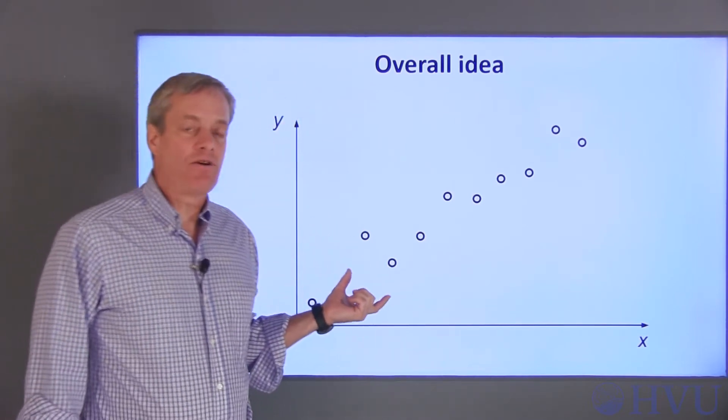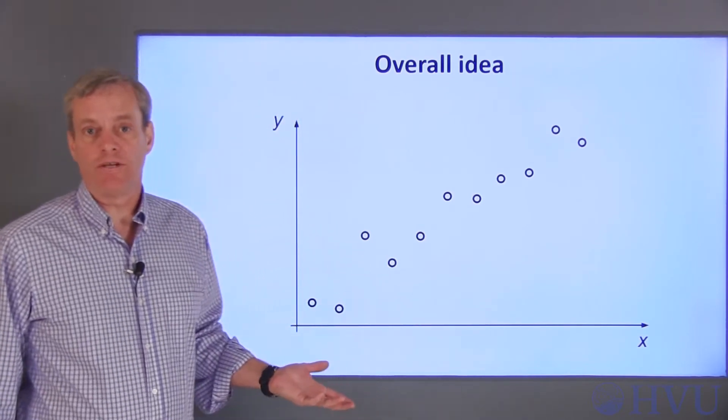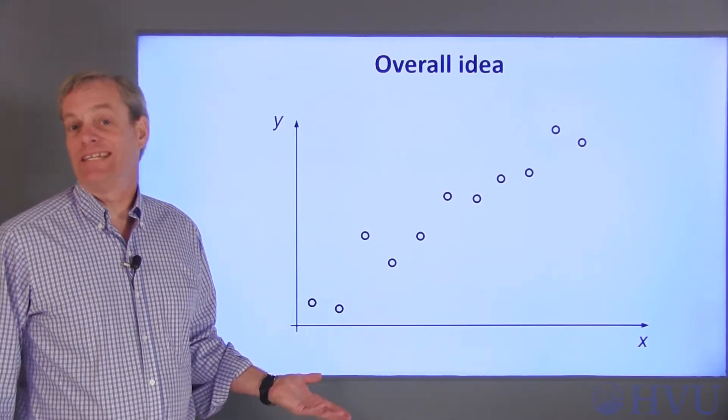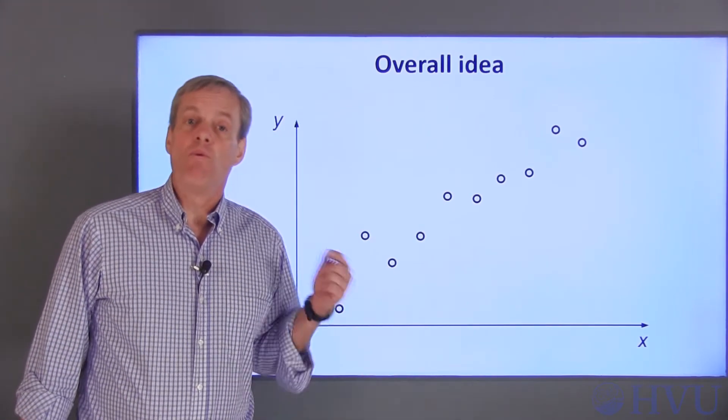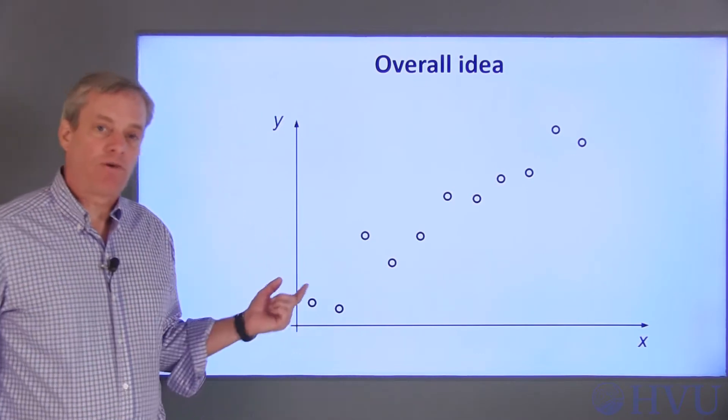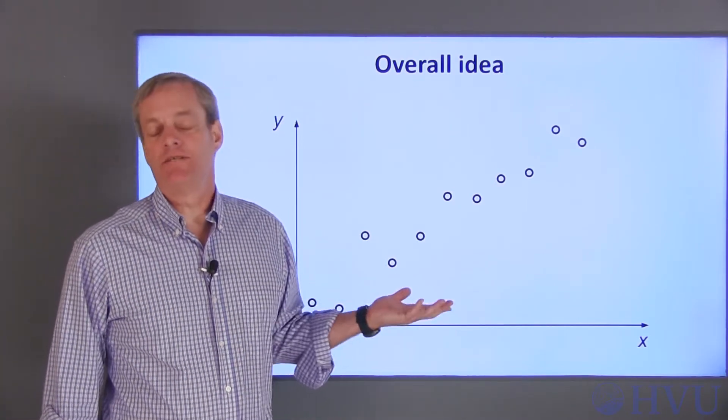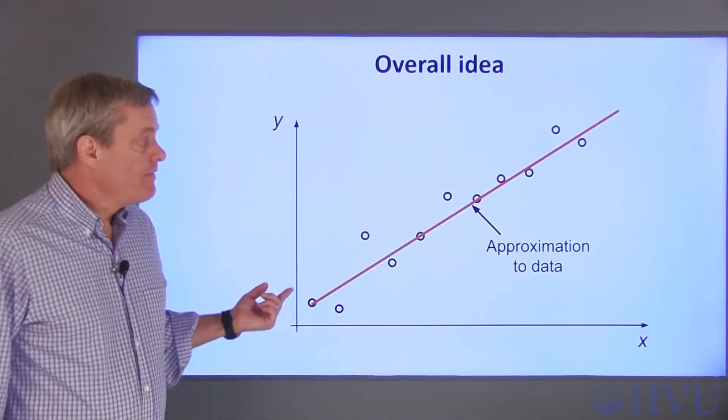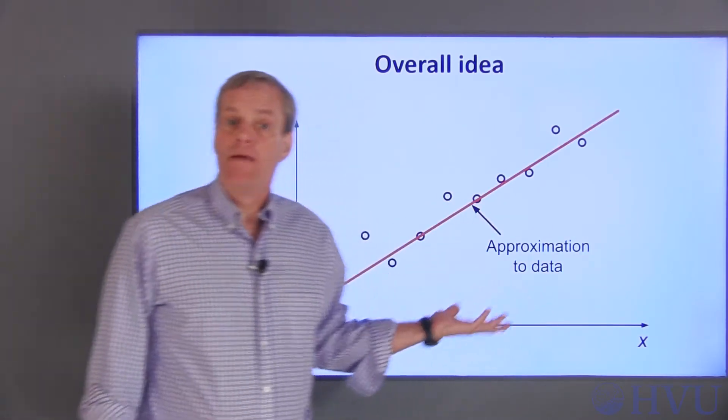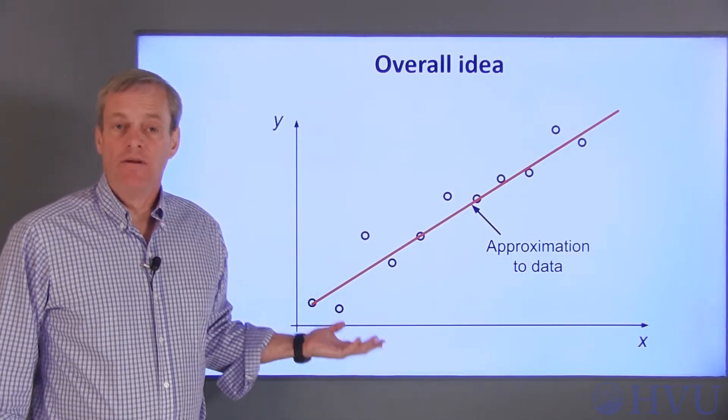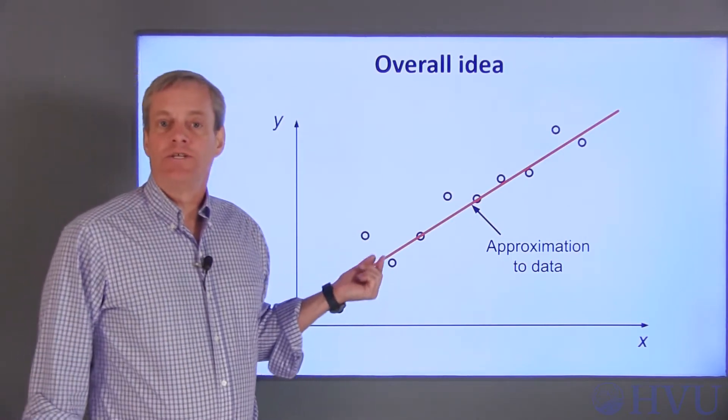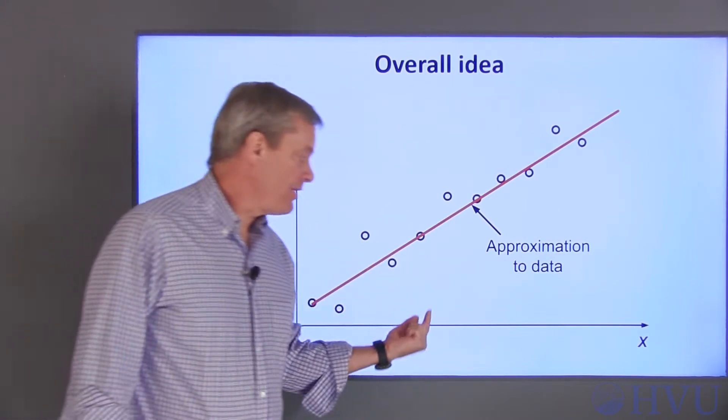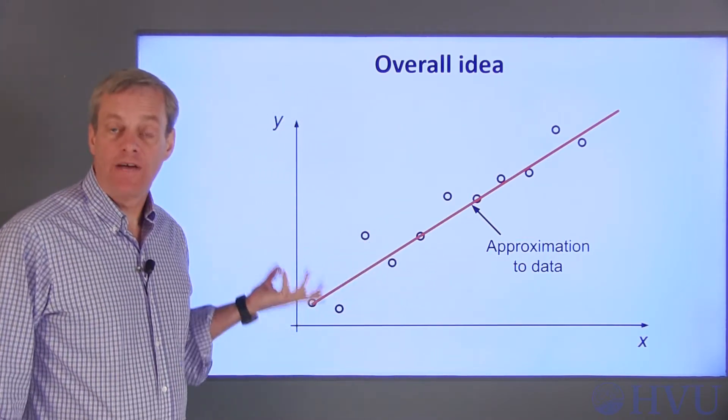Now this data may have errors in it, since no experiment is perfect, so we don't necessarily want to believe that every single data point is exactly correct. What we want to do is to create an approximation to the data that provides the best overall representation of all the data taken together. This straight line, for example, may best approximate this data set. Now I've got a good approximation to the overall behavior of the data, and I can determine the Y value corresponding to any value of X that I want.